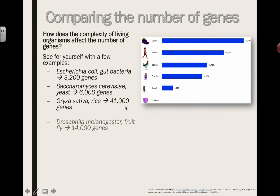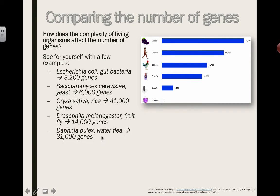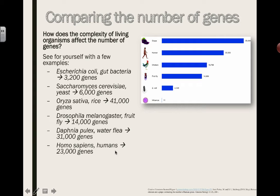Rice has 41,000 genes; this fruit fly, pretty accurately, has 14,000 genes. A water flea — a great little organism for studying heart rate — has 31,000 genes. And Homo sapiens, humans, have 23,000 genes. So you can see that I, as a human, would feel more complex than a rice plant, yet rice has 41,000 genes. There's not a clear relationship between complexity and the number of genes.